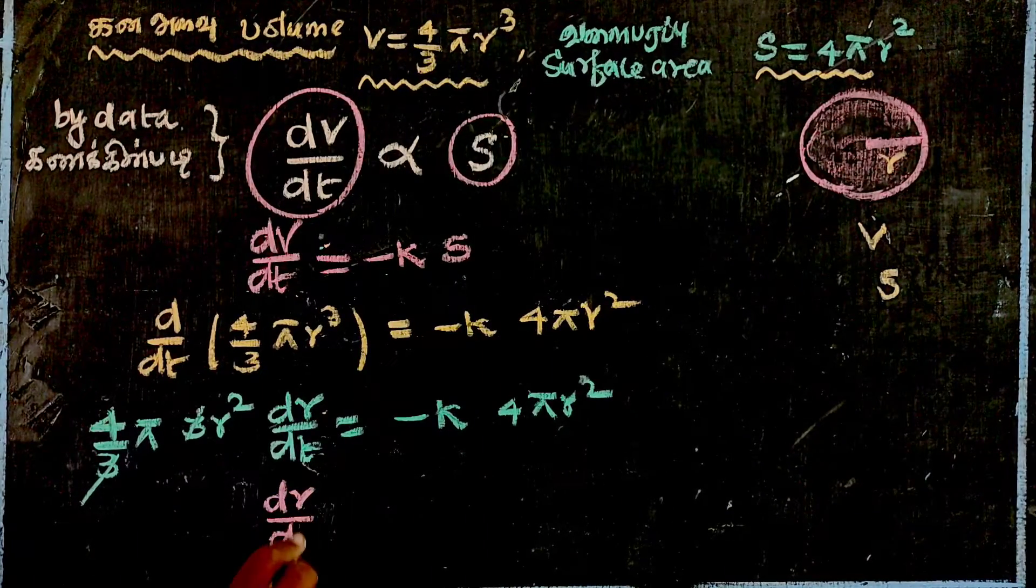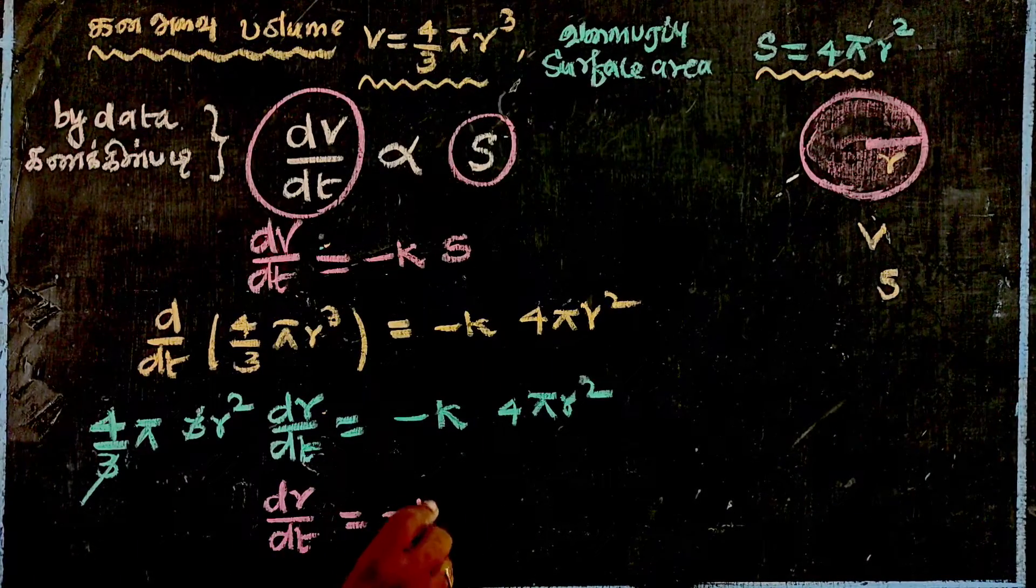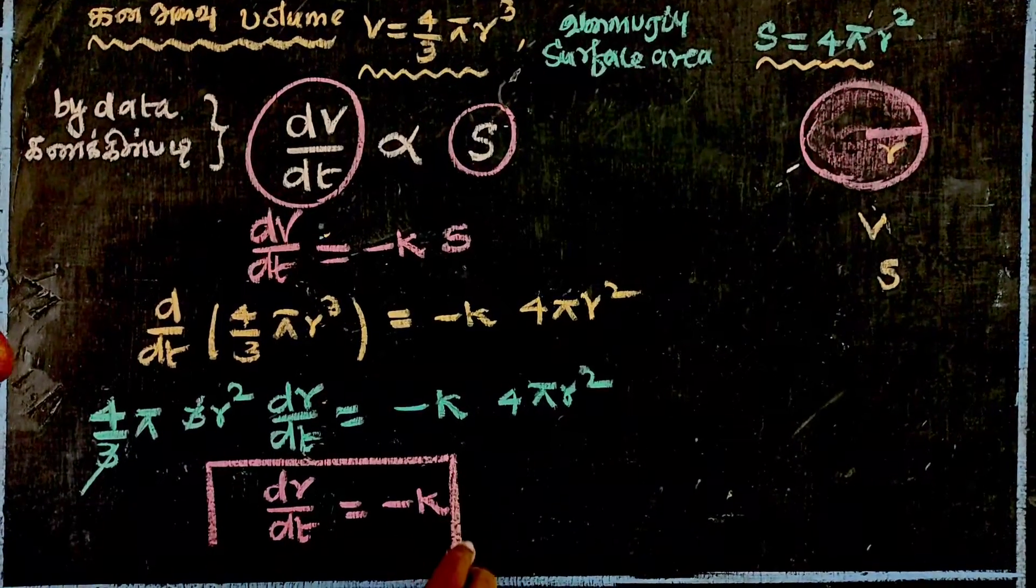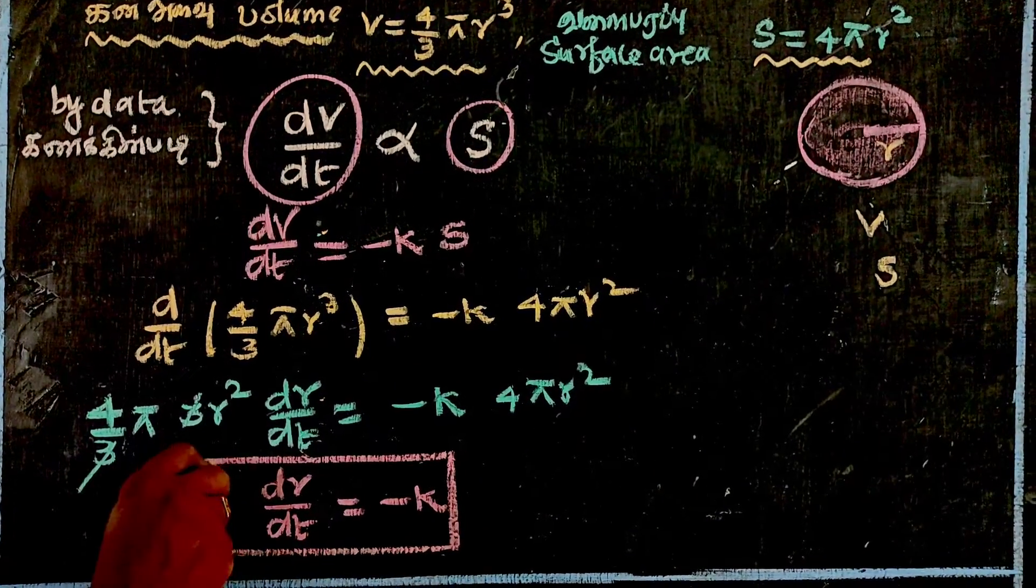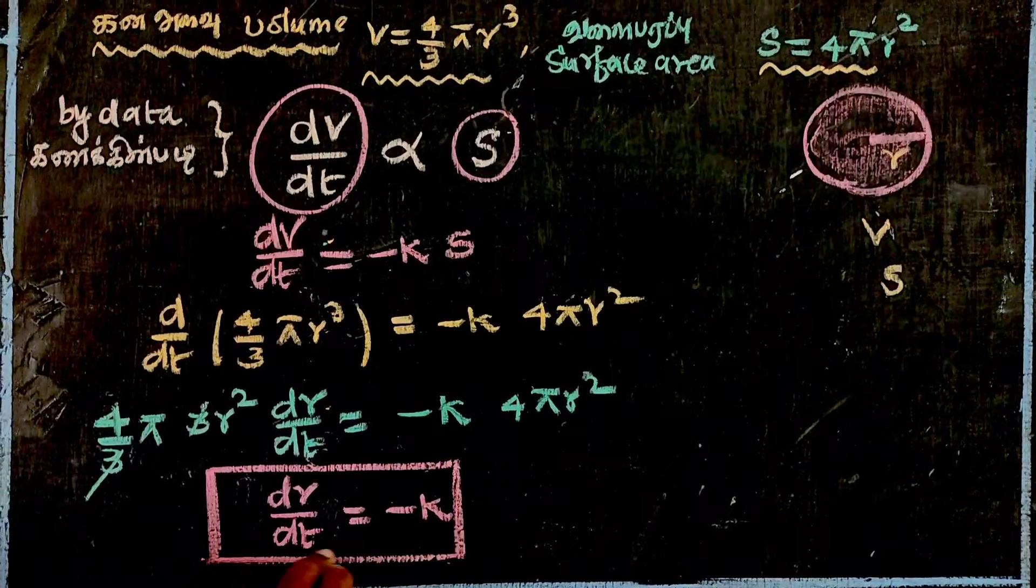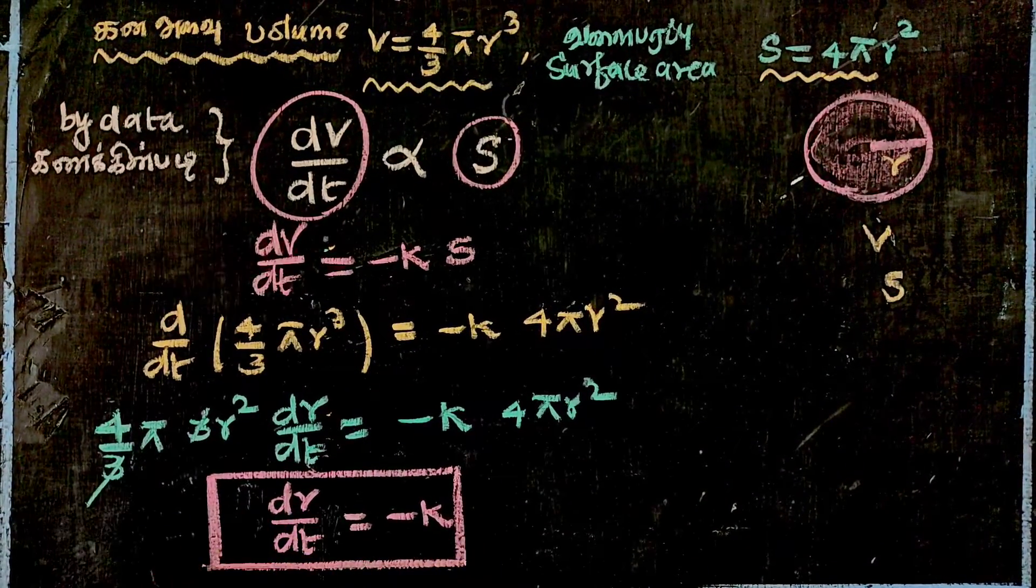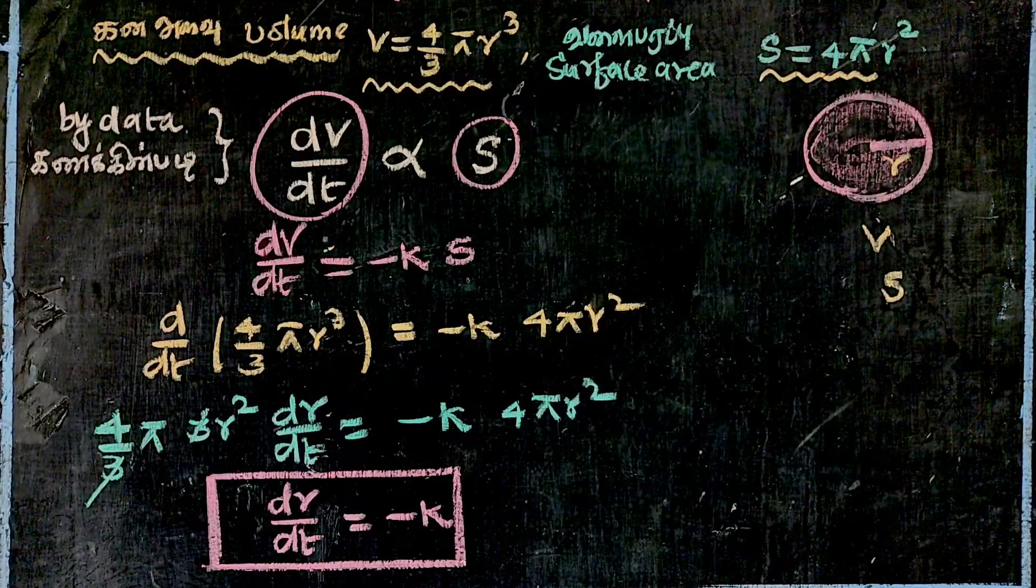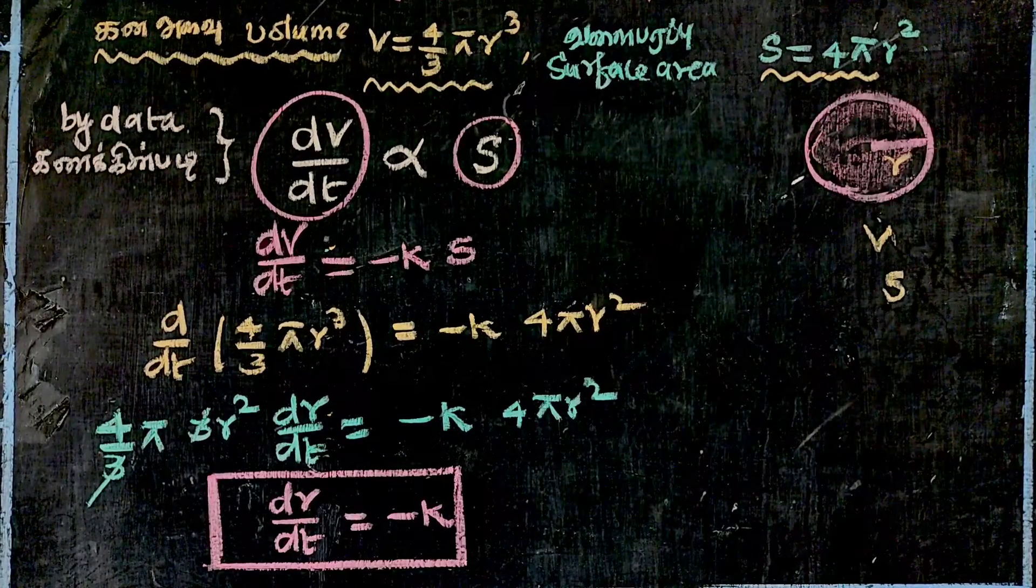dr/dt is equal to minus k. The rate of change in radius is equal to minus k, which is our differential equation.